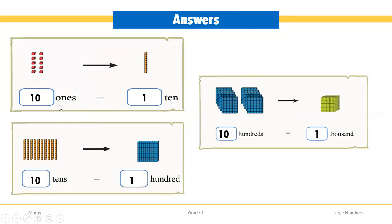Now let's take a small revision. First, we have 10 single blocks. When we combine 10 single blocks, we get a stick of 1 ten — 10 single blocks make the stick of 1 ten. Next, when we combine together 10 tens, it will be equal to 100. And when we count how many blocks were used in these 10 plates, it will be equal to 1000.